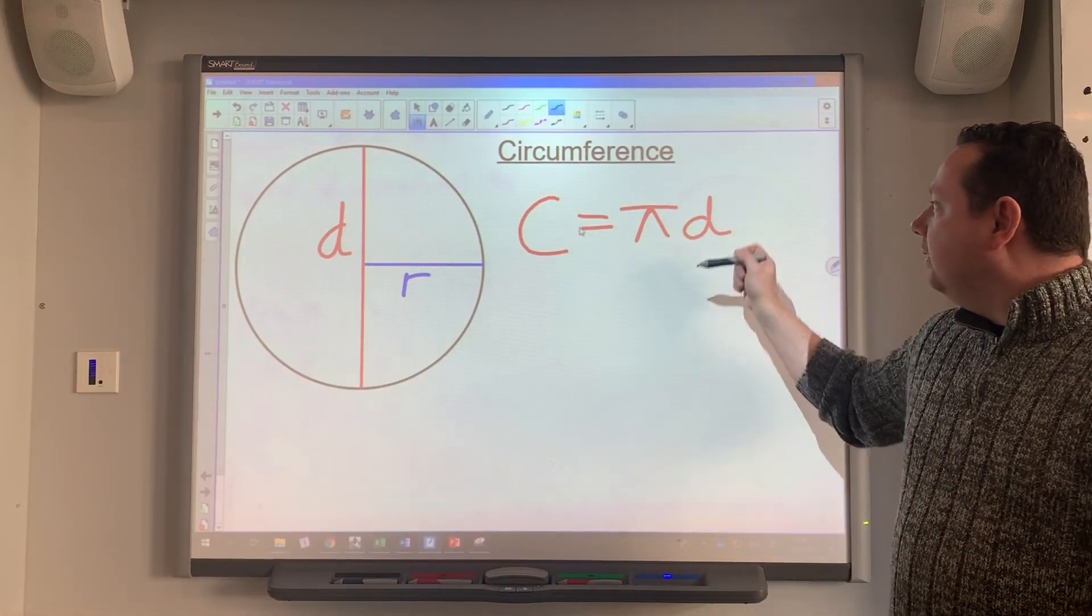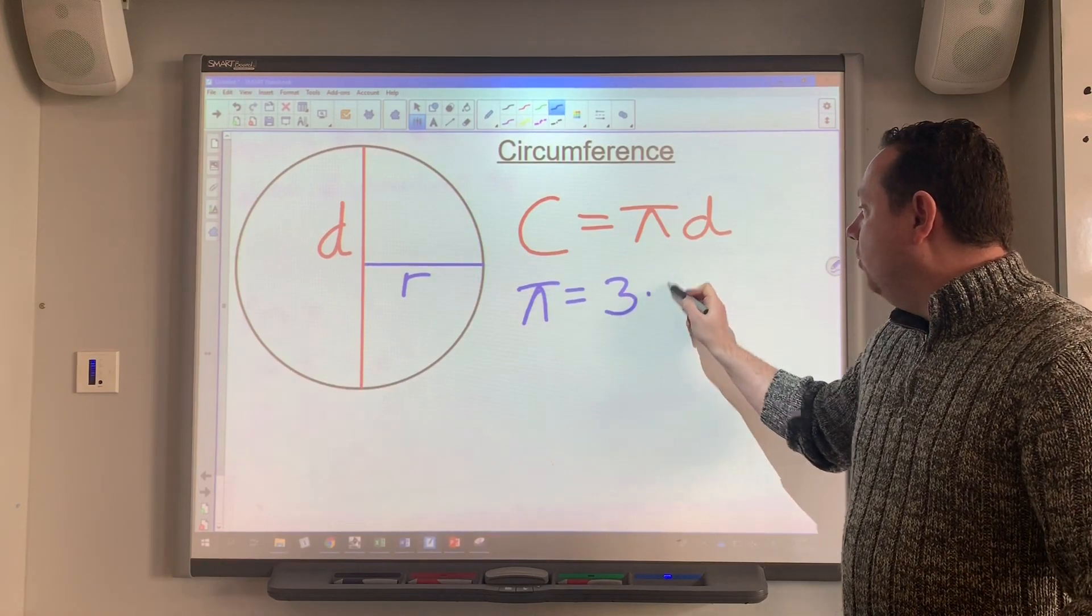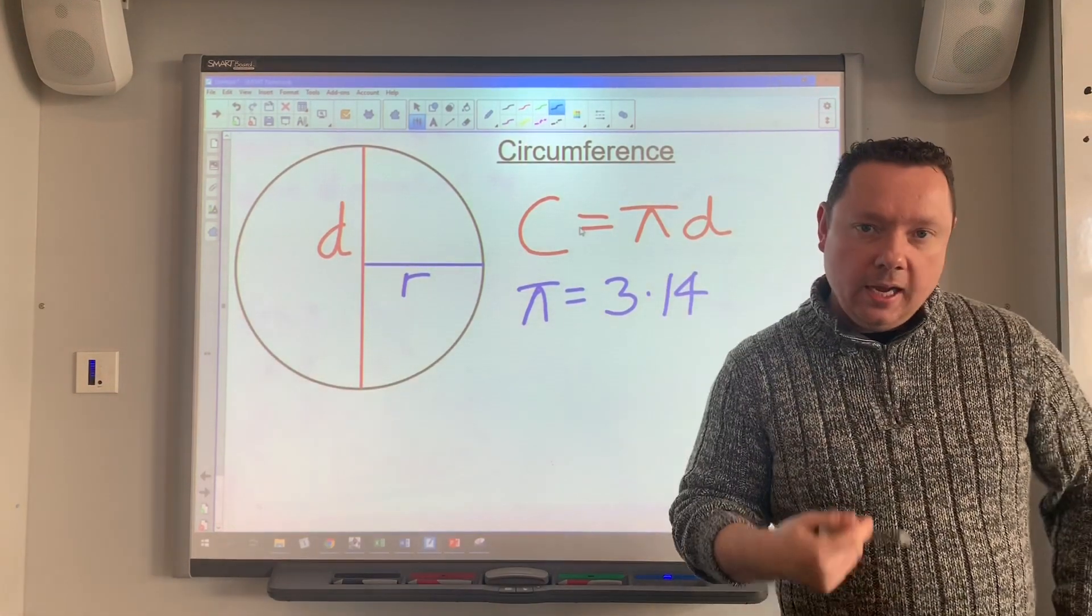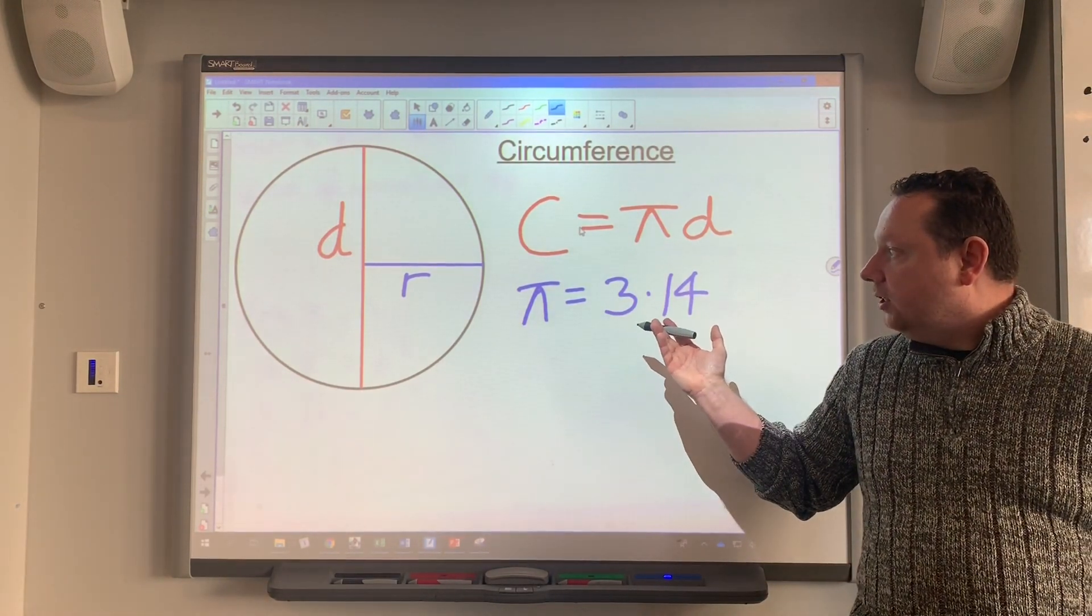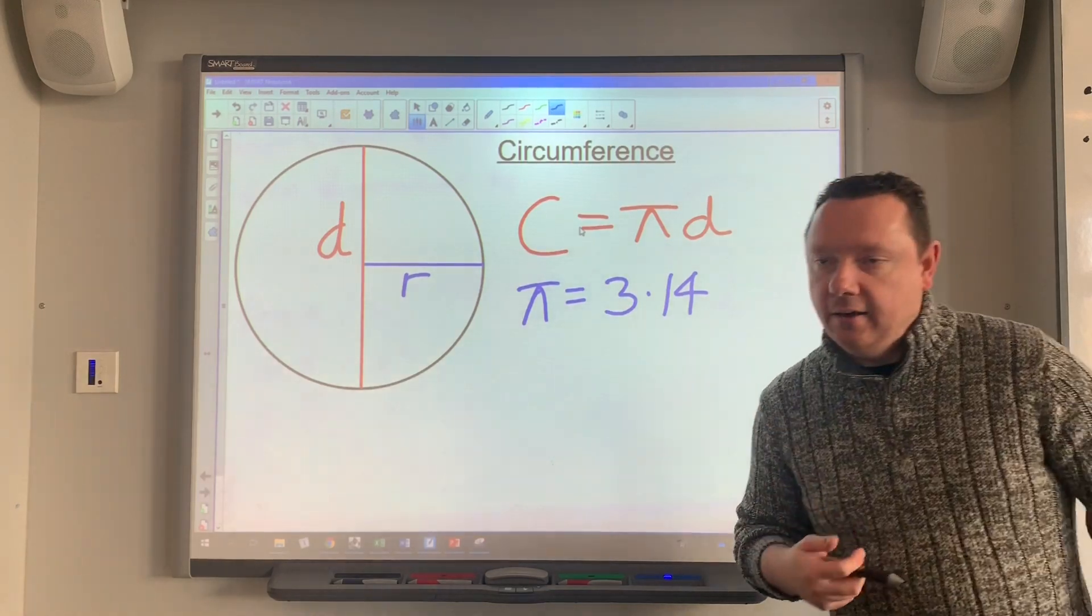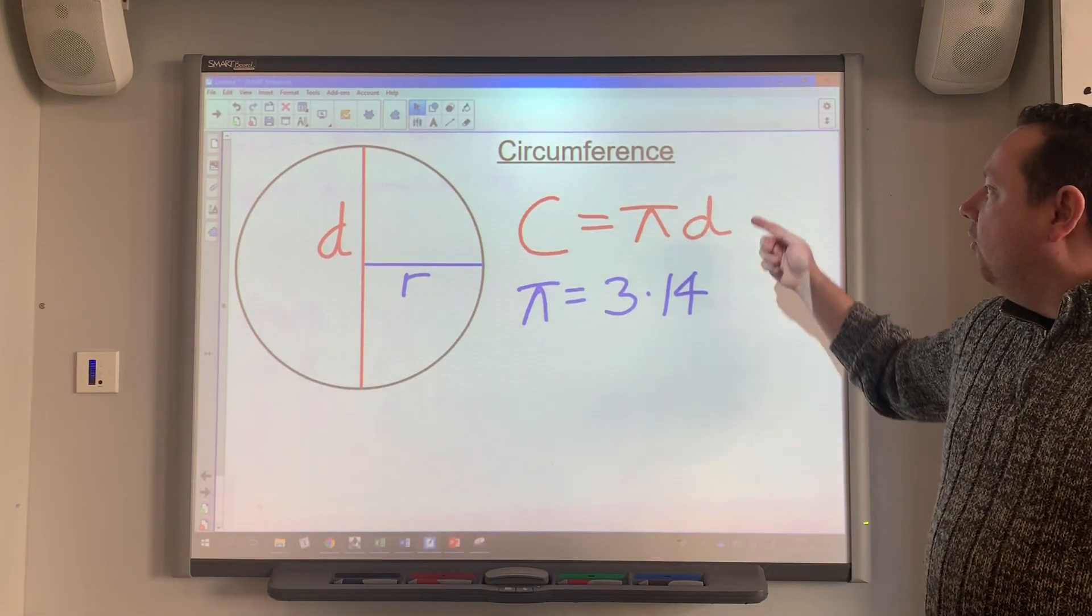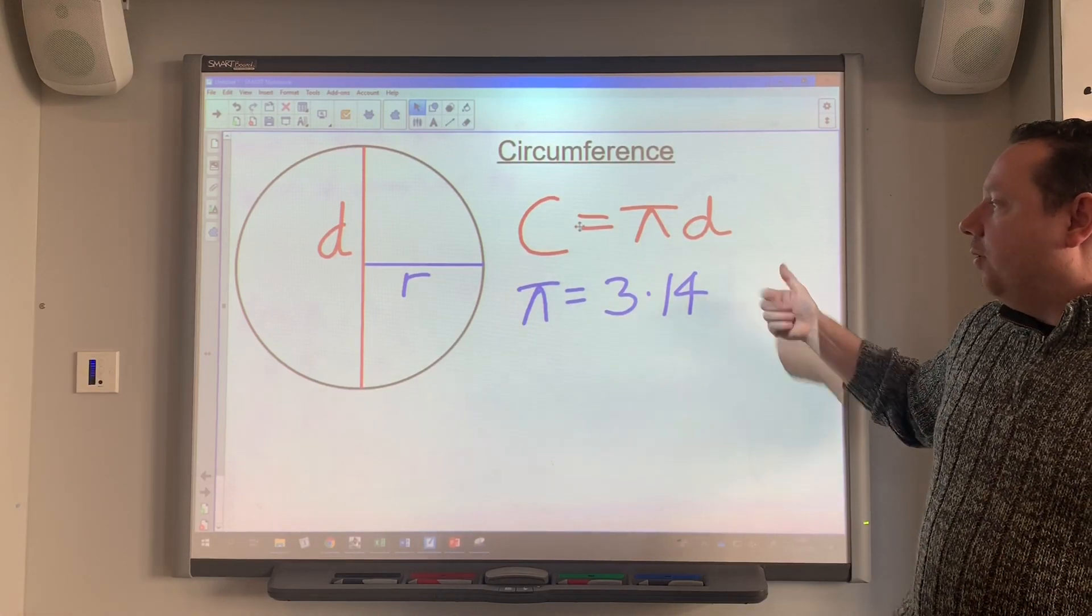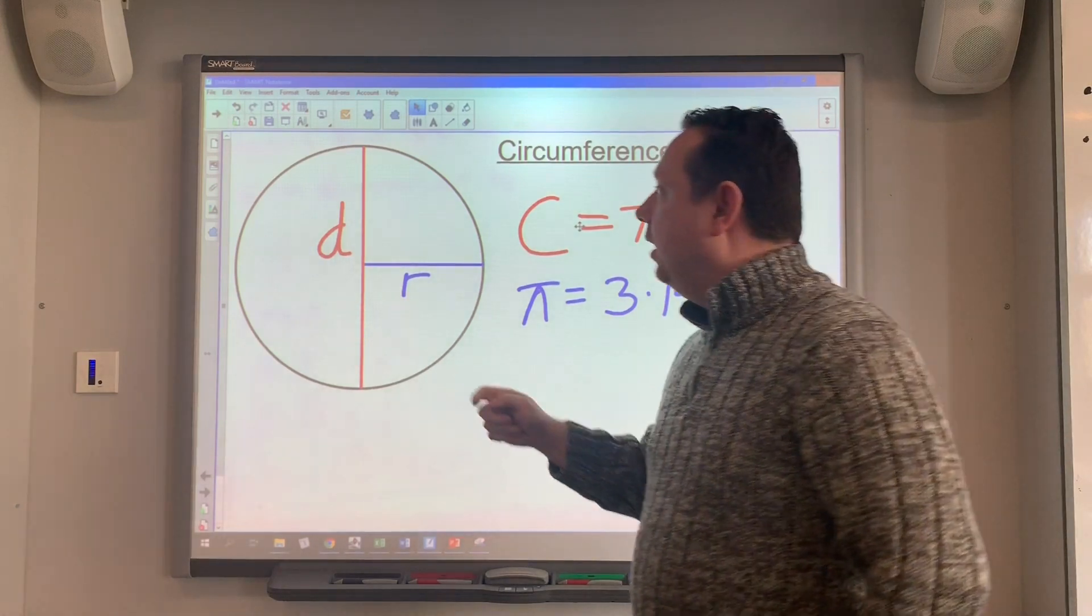This pi is just the number 3.14, which you can use if it's non-calculator, or obviously if you're using a calculator you can use the pi button, and I'll go into that later in the video. So that's basically it. You need to know the formula and you need to know that pi is 3.14. So I'll do two examples and then I'll show you how the calculator works.